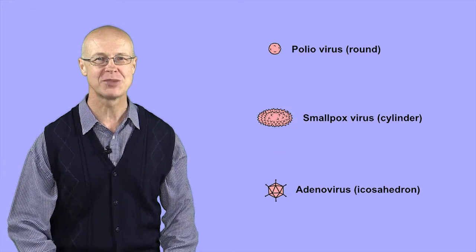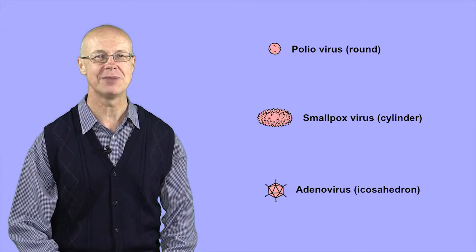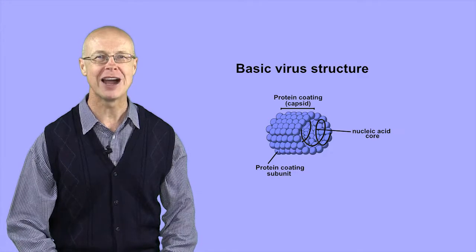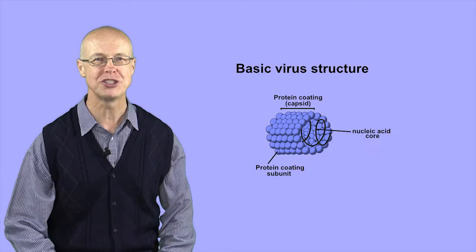Viruses come in a variety of shapes, but many have round, cylindrical or icosahedron shapes. There's nothing much to a virus, basically it's a core of nucleic acid surrounded by a coating of protein.